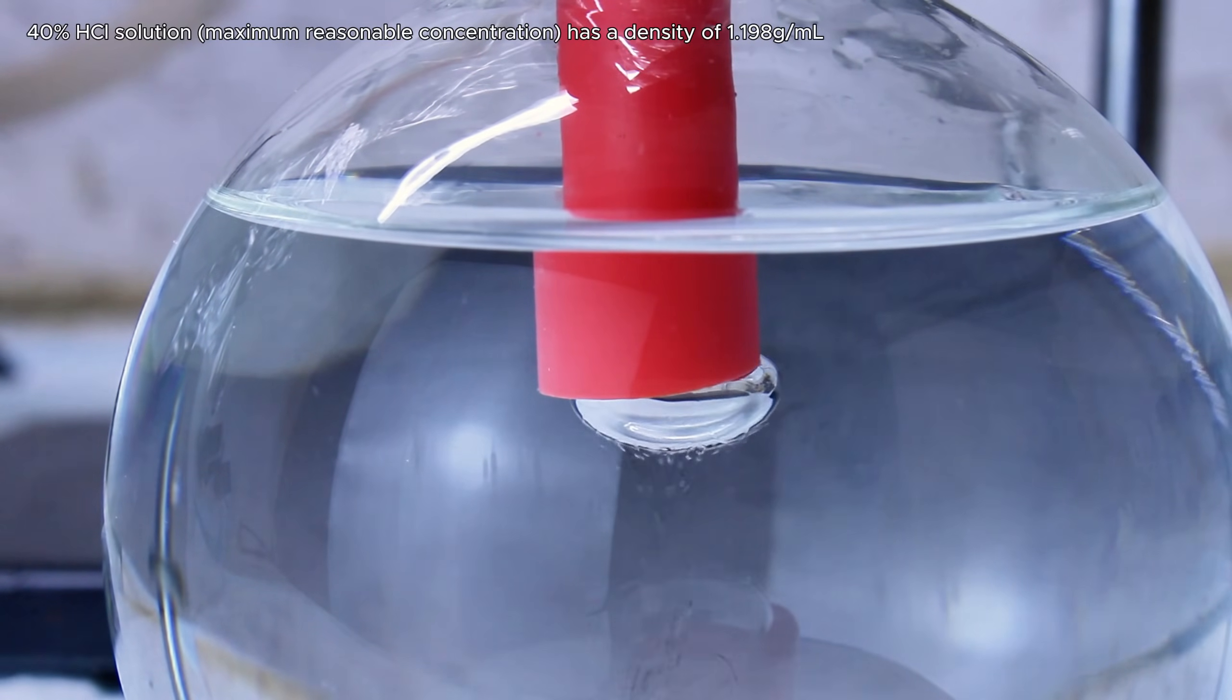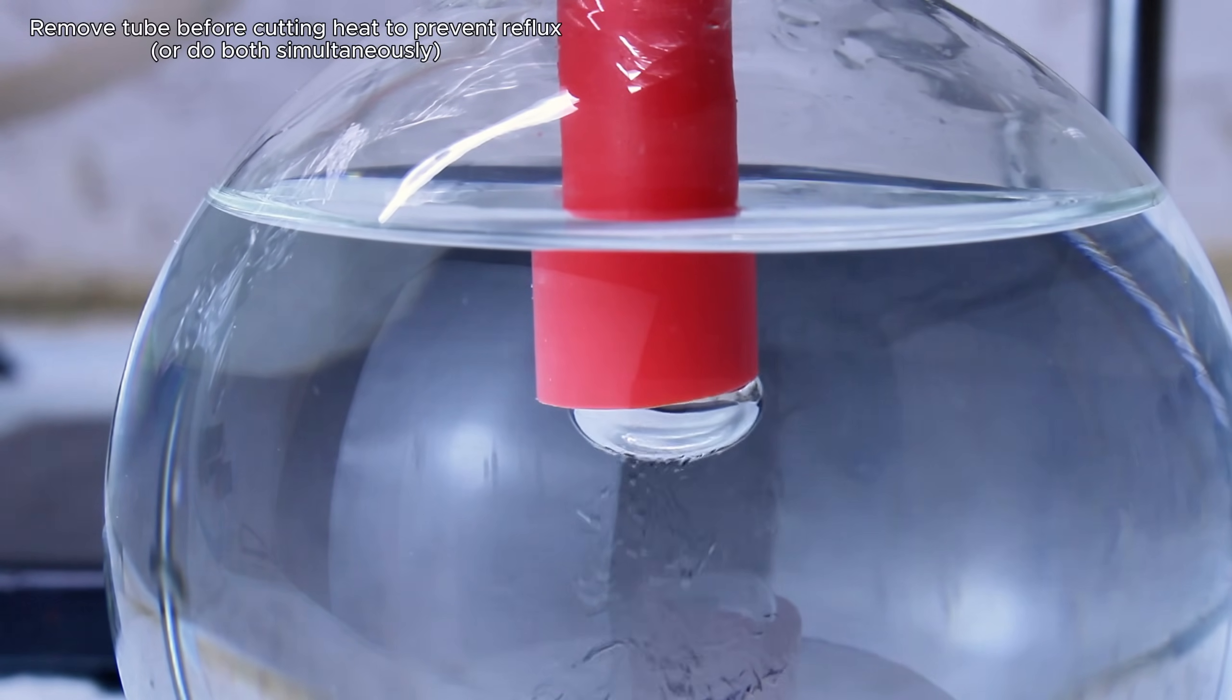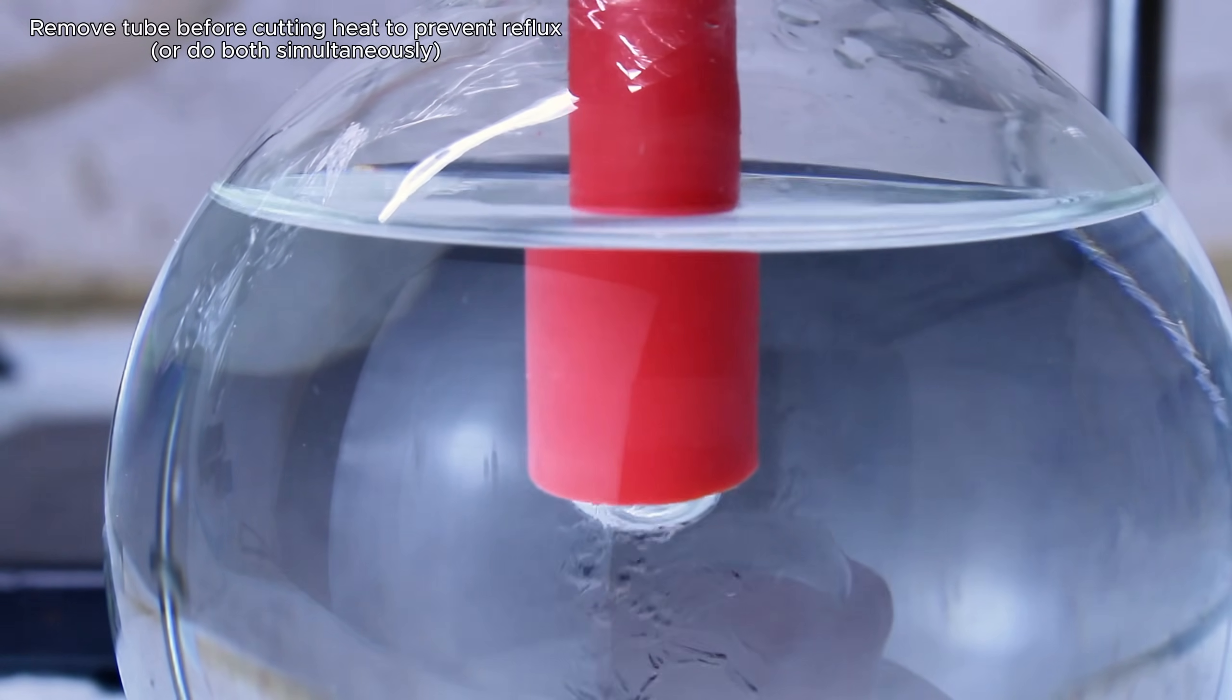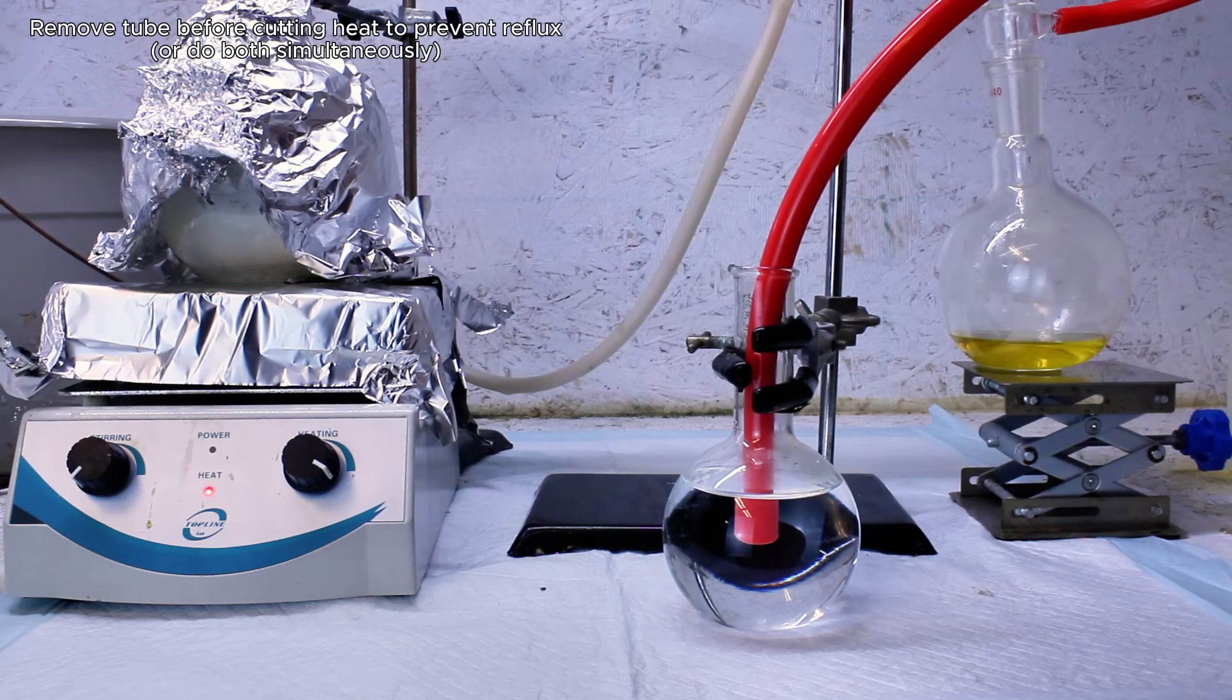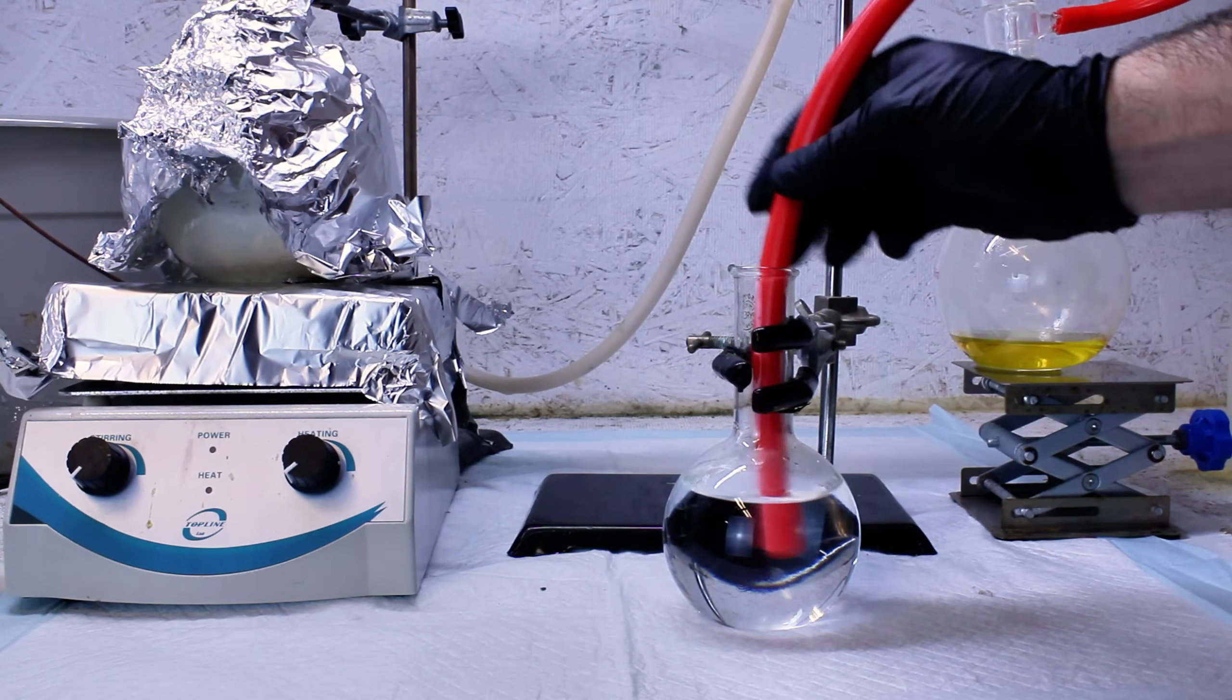Anyway, the progress of this reaction can be tracked by watching the dissolution of hydrogen chloride in water. Water saturated in hydrogen chloride is far denser than pure water, which results in the beautiful streaking effect you've been watching. Once this slows to a crawl or stops, the reaction is over, and you can cut the heat after making sure to remove the PVC tube from the acid.